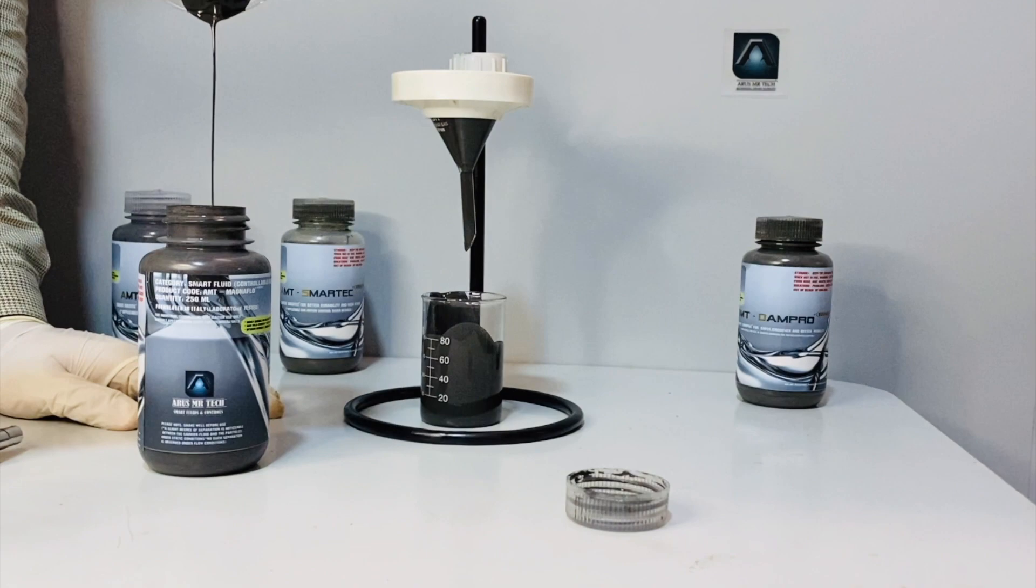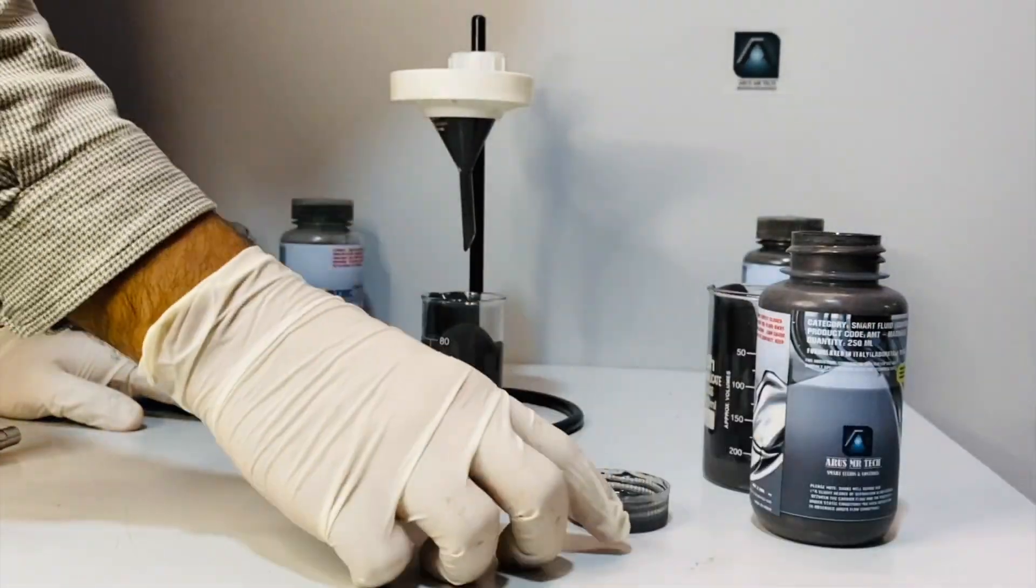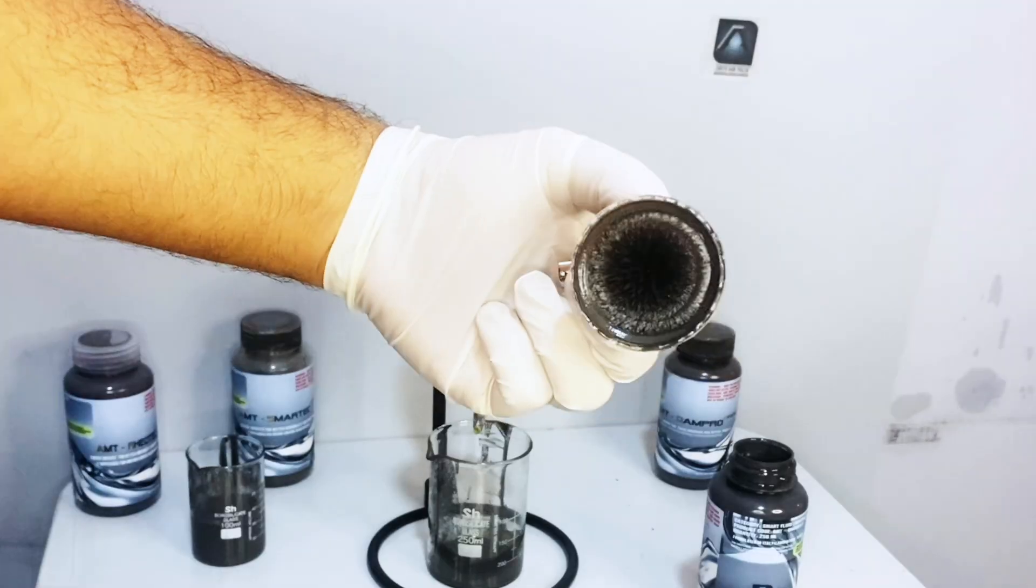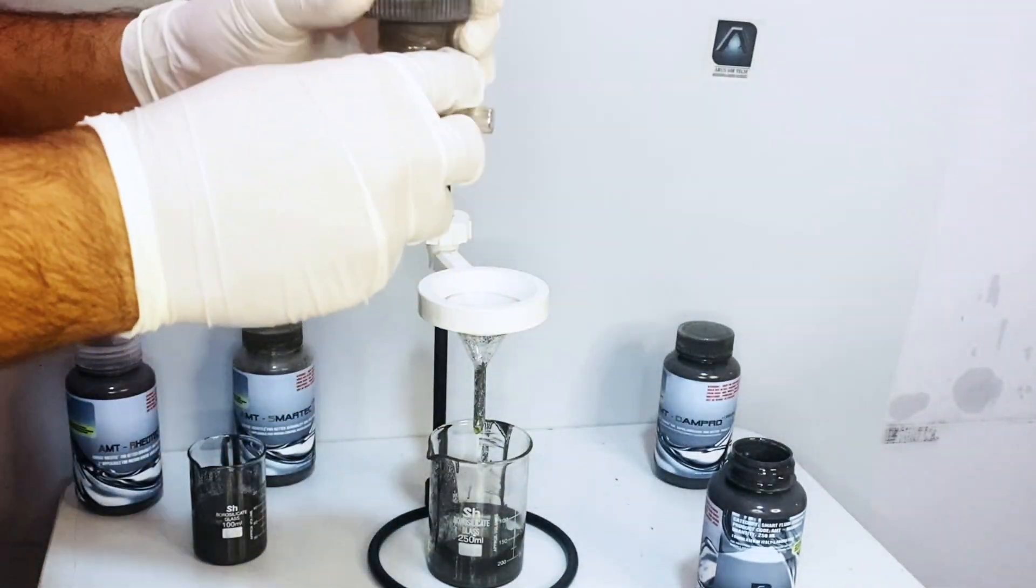Let's have a closer look to see how it works. Taking the MR fluid in a small cap and placing the magnet underneath and starting to circle it, as you can see the fluid forms spikes like metallic chains.